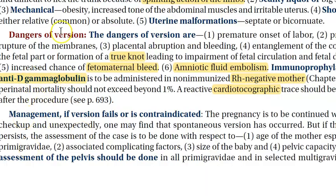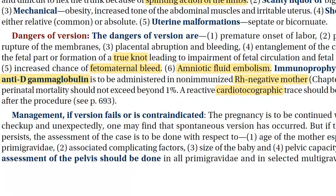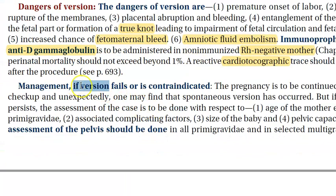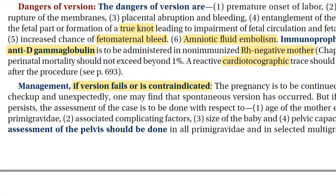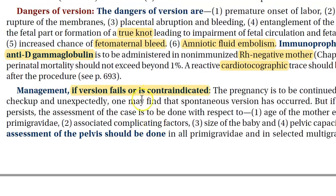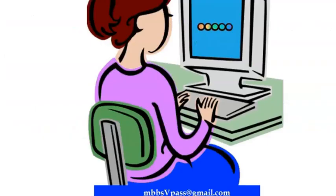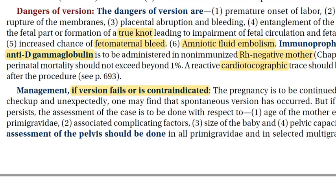If ECV fails or is contraindicated, you continue with the pregnancy as is and then plan delivery. You can either try for a vaginal delivery if you have the appropriate setup, or proceed to a cesarean section.